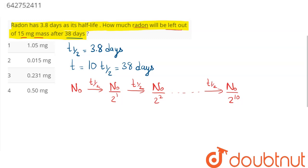which will be left will be m₀ divided by 2¹⁰. m₀ here is given as 15 milligrams divided by 2¹⁰, which is 1024.